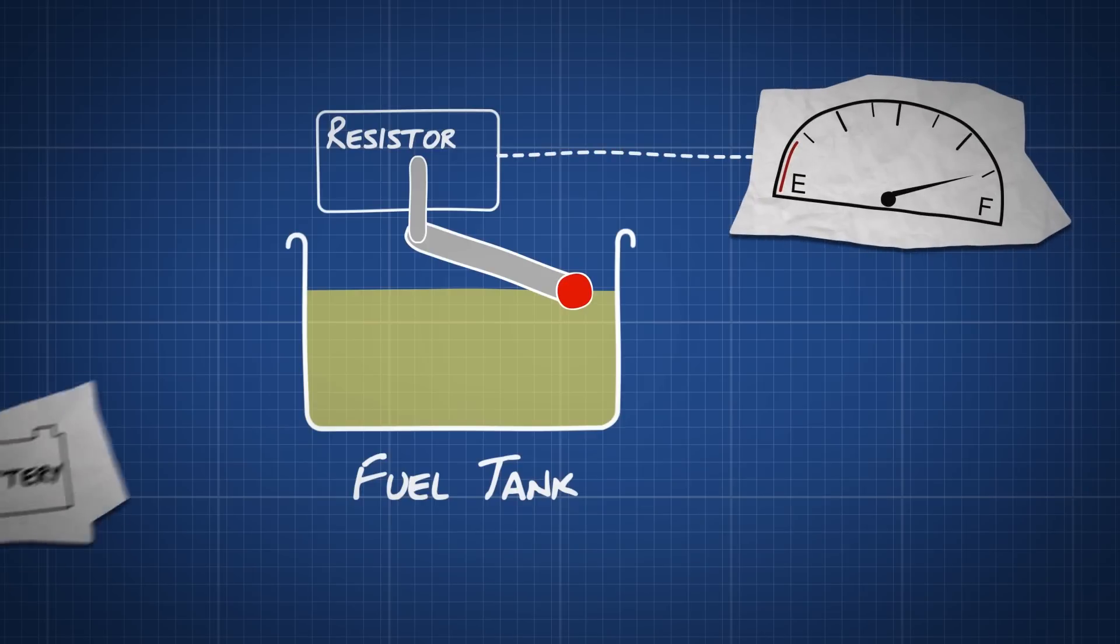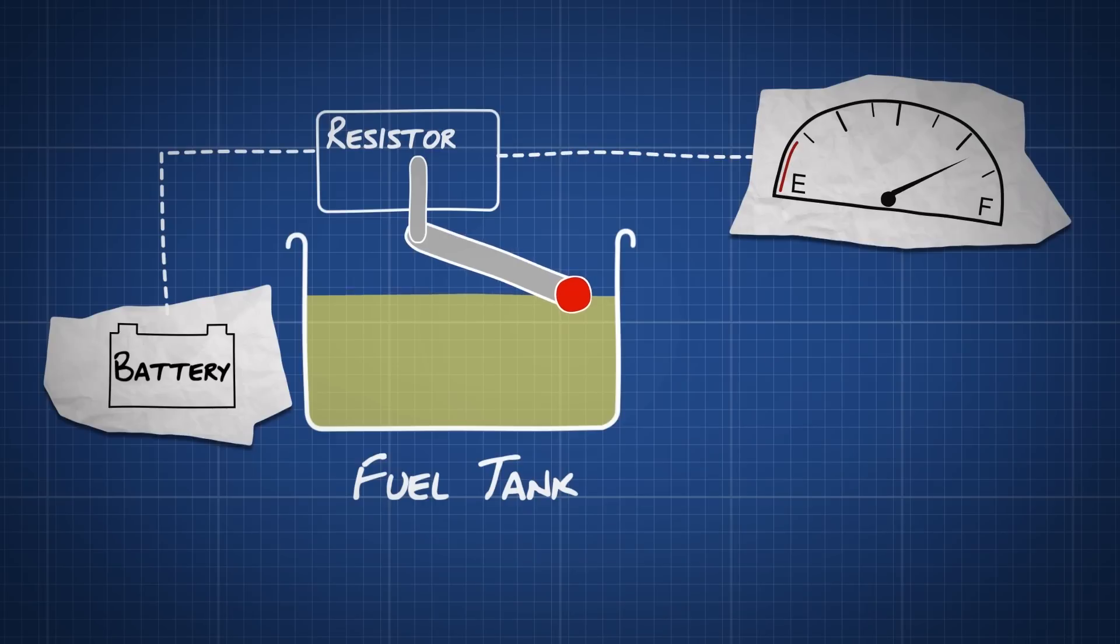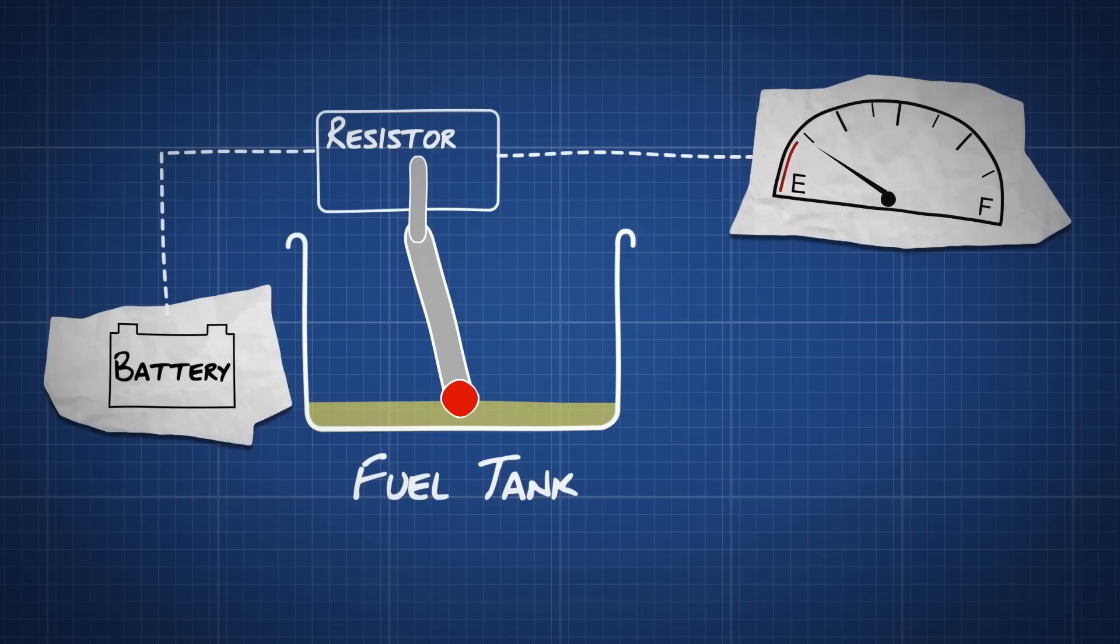The signal comes from your car's battery via a small coil. The lower the float drops, the more current the resistor sends to the fuel gauge, and the closer your gauge gets to empty.